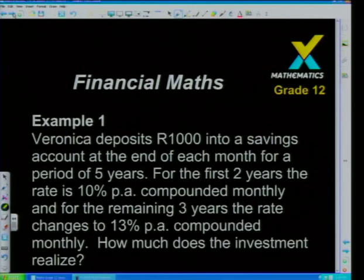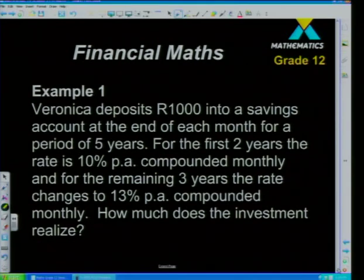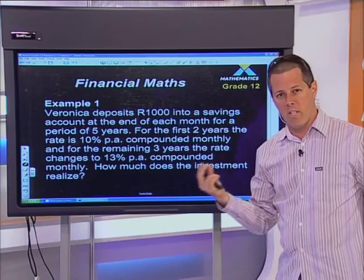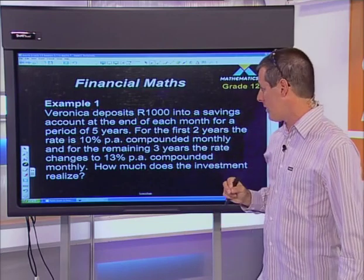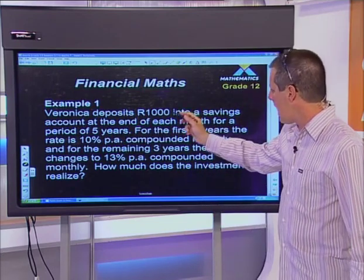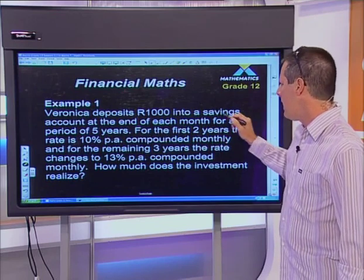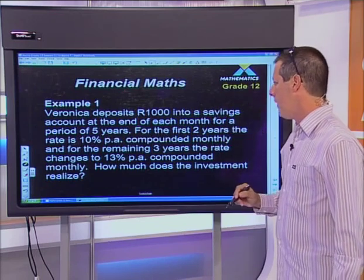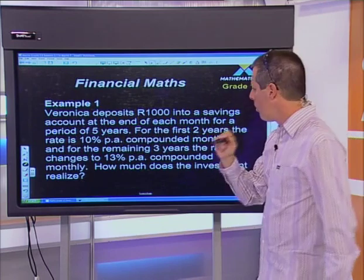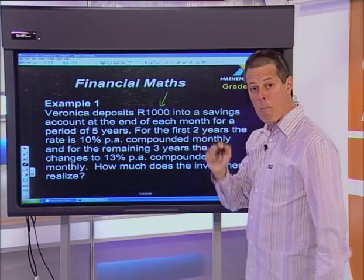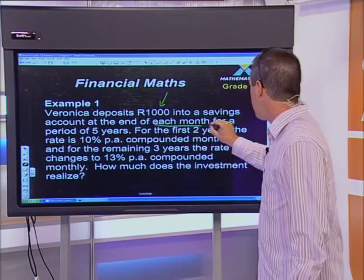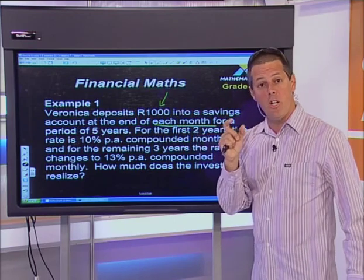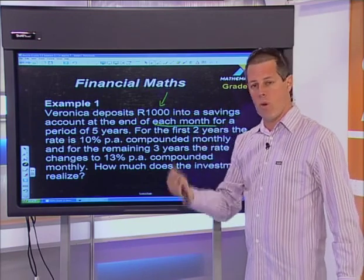Now let's work through an example. Veronica deposits R1,000 into a savings account at the end of each month for a period of five years. She's depositing the same amount every month at the same frequency — that's an annuity. But there's a trick: for the first two years the rate is 10% per annum compounded monthly, and for the remaining three years the rate changes to 13% per annum compounded monthly. How much does the investment realize?